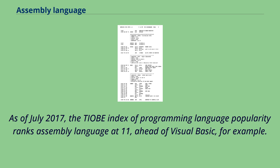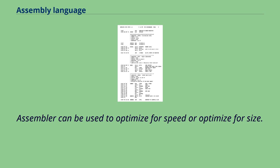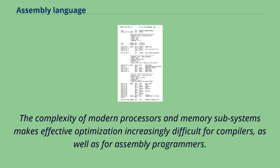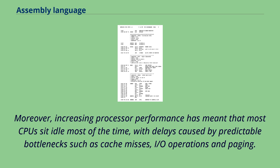There have always been debates over the usefulness and performance of assembly language relative to high-level languages. Although assembly language has specific niche uses where it is important, there are other tools for optimization. As of July 2017, the TIOBE index of programming language popularity ranks assembly language at 11, ahead of Visual Basic, for example. Assembler can be used to optimize for speed or optimize for size. In the case of speed optimization, modern optimizing compilers are claimed to render high-level languages into code that can run as fast as handwritten assembly. The complexity of modern processors and memory subsystems makes effective optimization increasingly difficult for compilers as well as for assembly programmers. Moreover, increasing processor performance has meant that most CPUs sit idle most of the time, with delays caused by predictable bottlenecks such as cache misses, I/O operations and paging, making raw code execution speed a non-issue for many programmers.